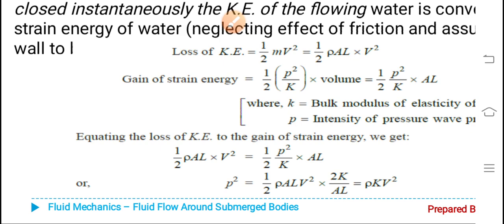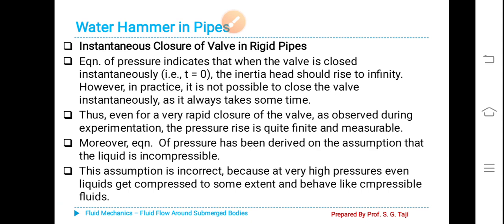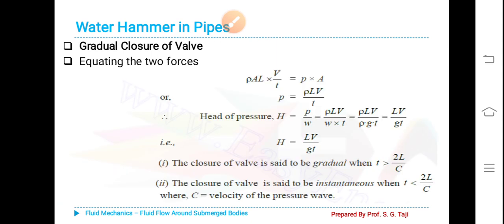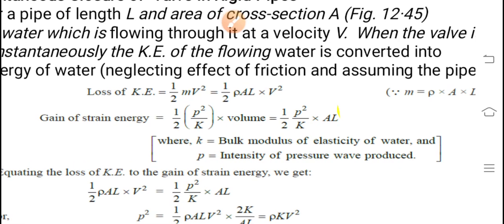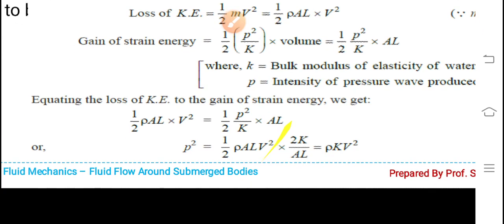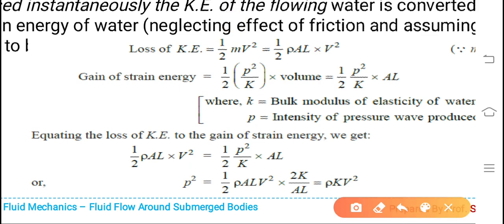If you rearrange these equations, here itself you can see A will be cancelled, L and L will be cancelled. V squared and p squared will remain. Therefore p squared is equal to half of rho AL v squared multiplied by 2k by AL. If you rearrange this equation we will get rho k v squared.